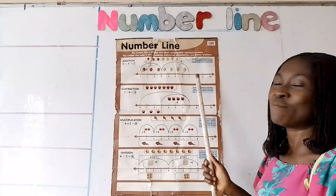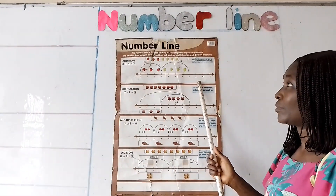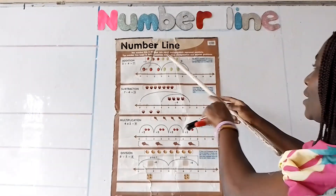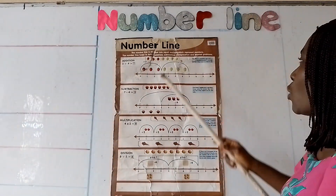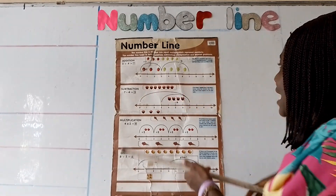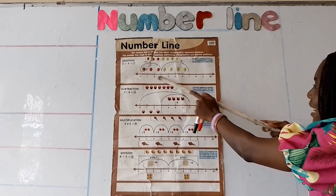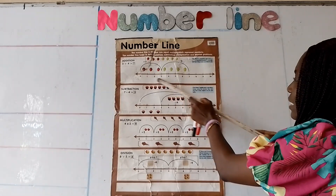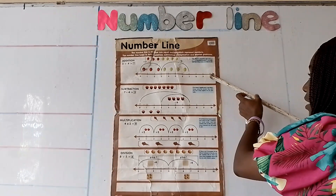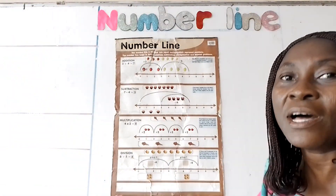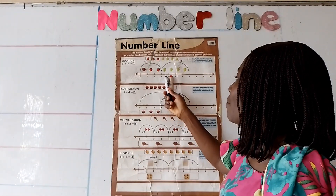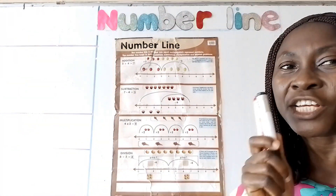Now I want you to look at my chart. The chart says the number line is divided into equal sections which represents numbers. Look at the board. Now I have a line with numbers written on it. This line having numbers written on it is called a number line. And you can use this number line to solve your addition problem.